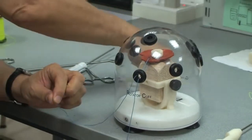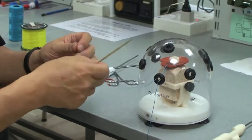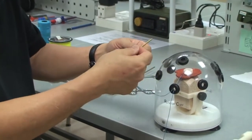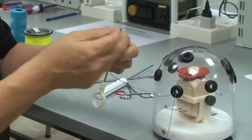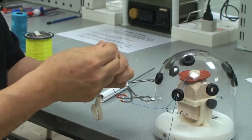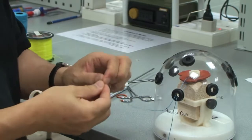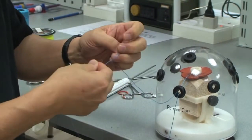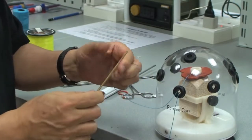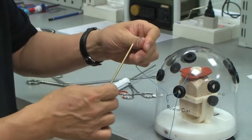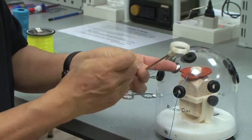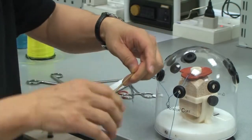Then I load the suture through the knot pusher. I'm using a loop here to transfer that suture through the tip of the knot pusher.